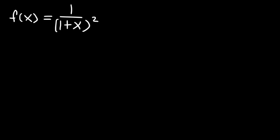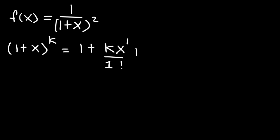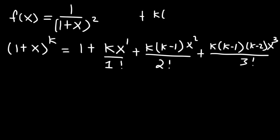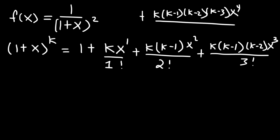You need to be familiar with the formula when dealing with binomial series. Here it is: 1 plus x raised to the k power equals the series 1 plus kx over 1 factorial, plus k(k-1)x² over 2 factorial, plus k(k-1)(k-2)x³ over 3 factorial, plus k(k-1)(k-2)(k-3)x⁴ over 4 factorial, and the pattern continues to repeat.